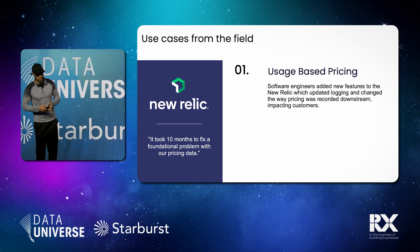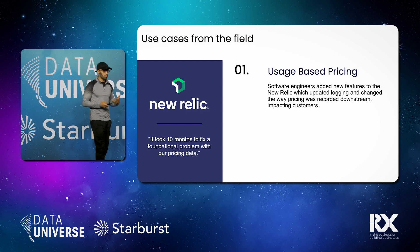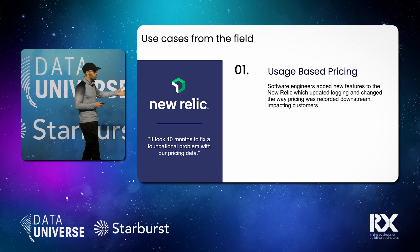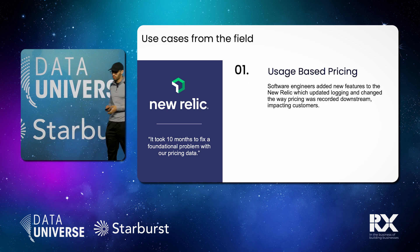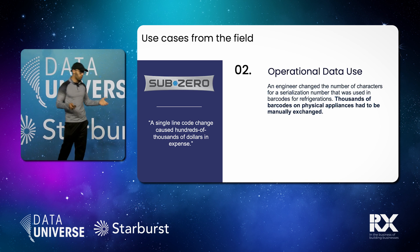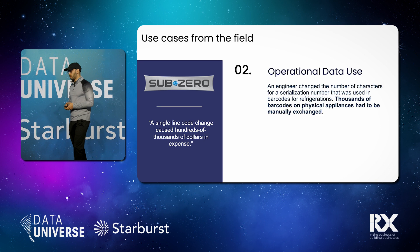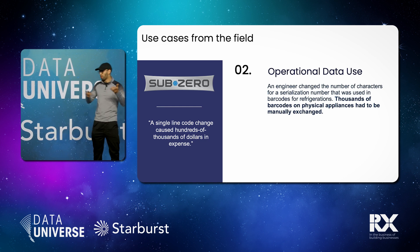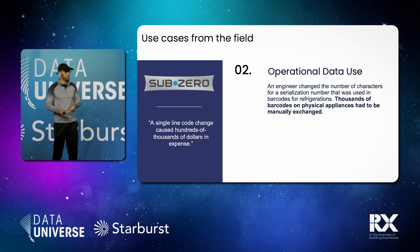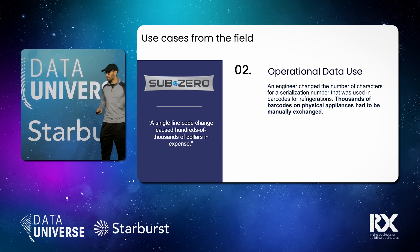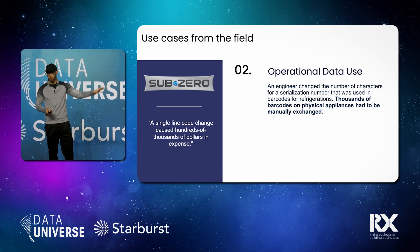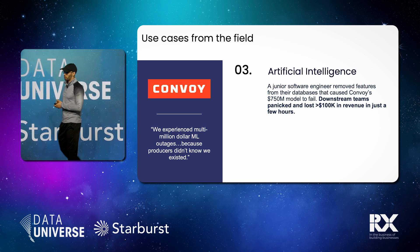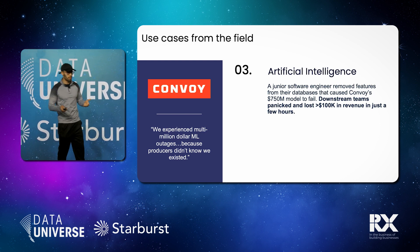A few use cases that illustrate the point. One is usage-based pricing at New Relic — the New Relic team does all of their financials based on event data coming from their app. Anytime a software engineer made a change to that event data, it would cause a nightmare for the sales team and the finance team. Sub-Zero is a refrigeration company. They had a transactional database that stored the serialization number of each refrigerator. An engineer unknowingly changed that number from a six-character string to a seven-character string. That number got printed out as a barcode for every single refrigerator — thousands of these were shipped to customers, and they had to do a manual recall. And at Convoy, we had very large-scale machine learning models, and changes coming all the time from source caused chaos for our data team and prevented us from moving quickly.